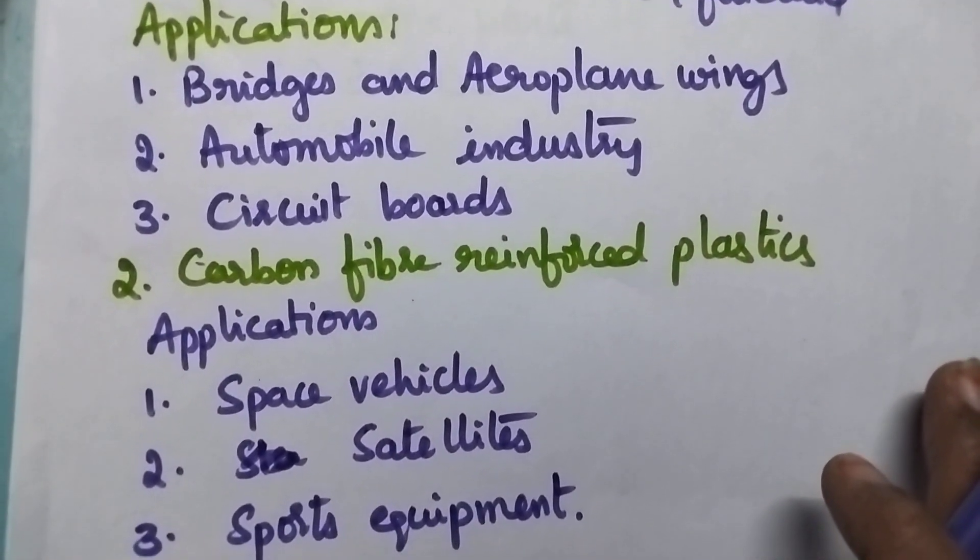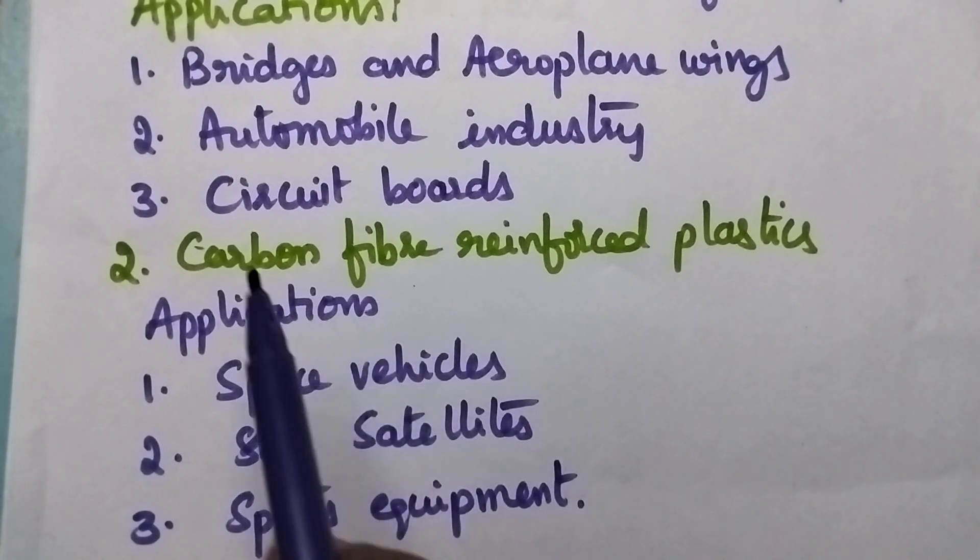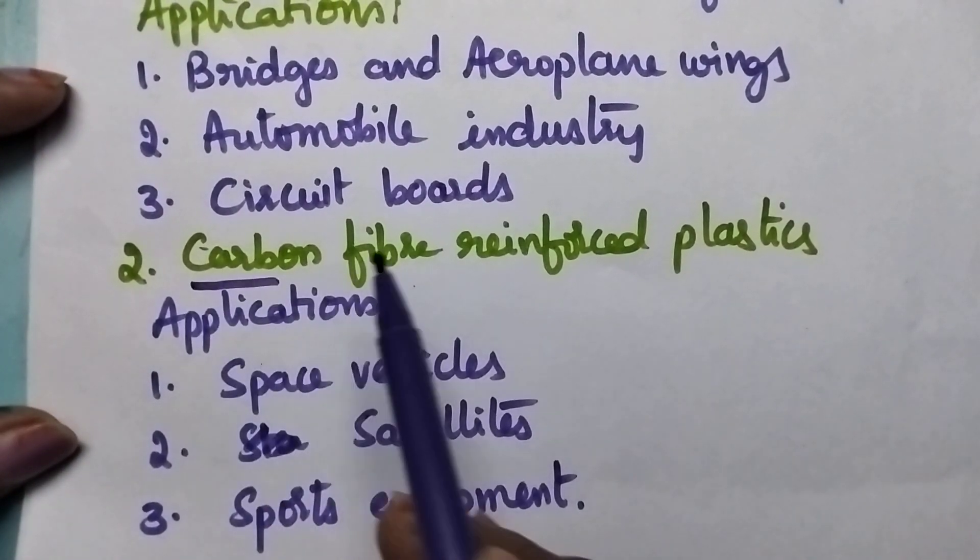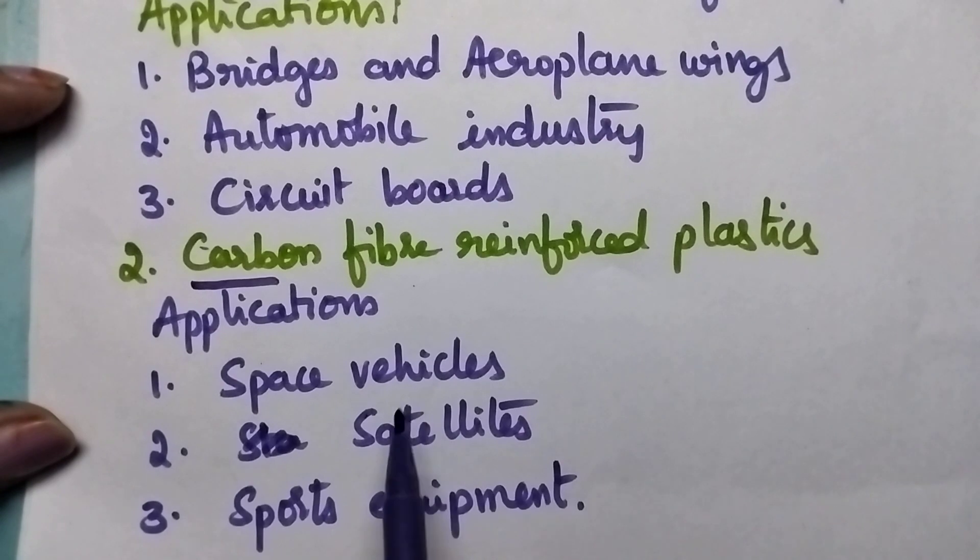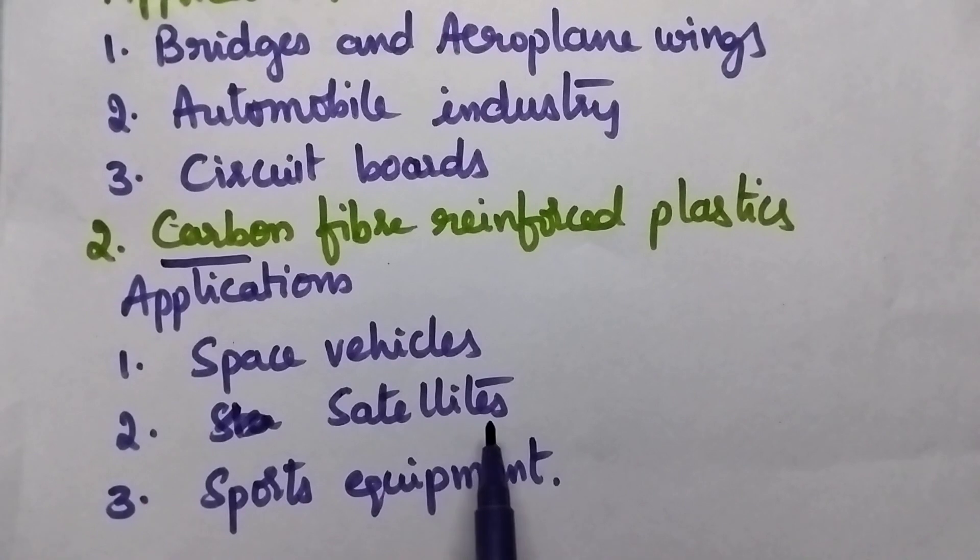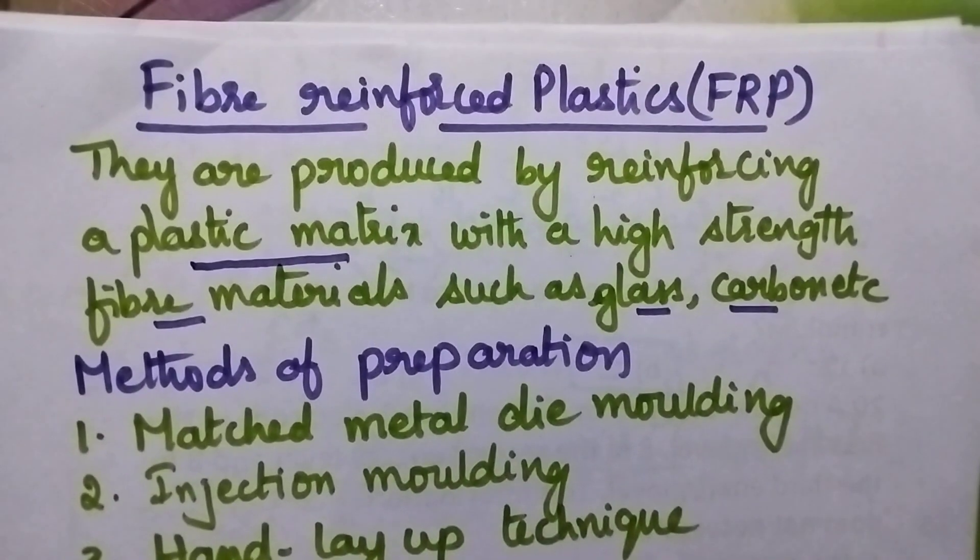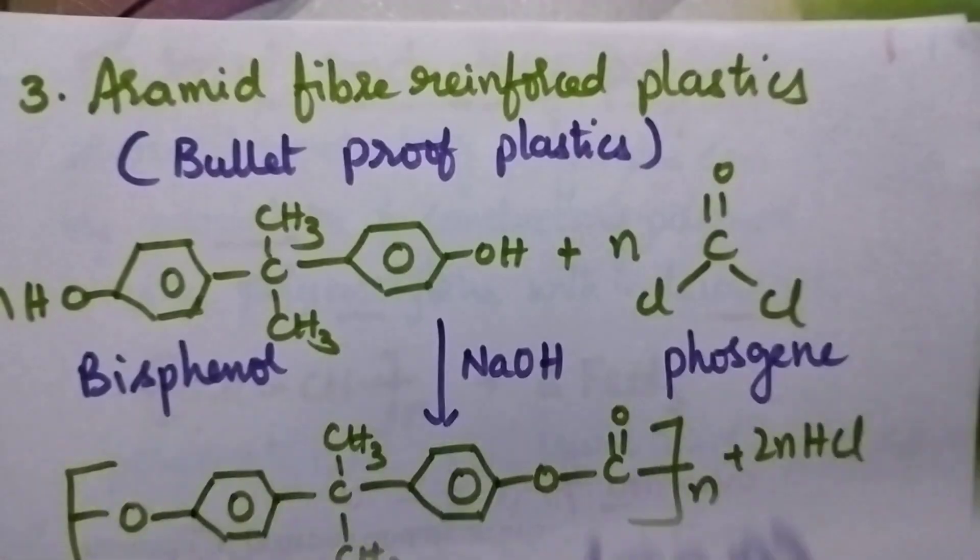Coming to the second category, it includes carbon fiber reinforced plastics. They can be obtained by mixing carbon with the plastic matrix. They are especially useful for designing space vehicles, satellites, and also used in sports equipment.